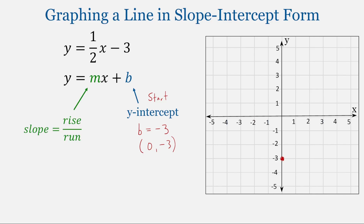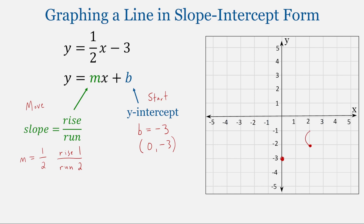How do we move? The slope tells us how to move. Our slope m is equal to 1/2, which means we're going to rise 1 and run 2 — go up 1 and to the right 2. That gives us a second point on the line. From that second point, we go up 1 and to the right 2 again, giving us a third point.